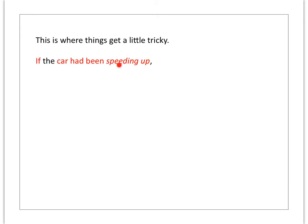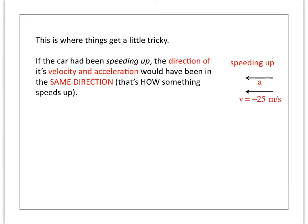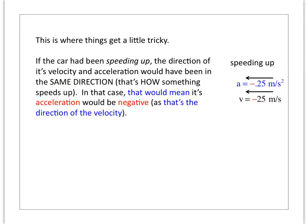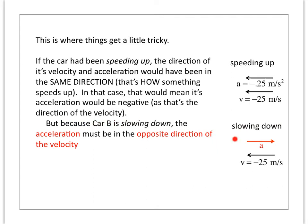If car B had been speeding up, the direction of its acceleration and velocity would have been in the same direction. That's how something speeds up. In that case, the sign of the acceleration would have been negative, as that's the sign of the velocity. In our case, car B was slowing down. That meant that the direction of the acceleration and the velocity had to be opposite one another, which meant that the sign of the acceleration had to be opposite the sign of the velocity, or positive.